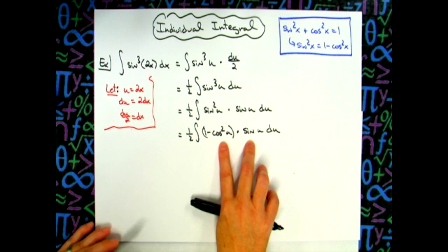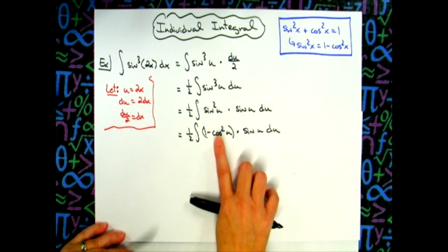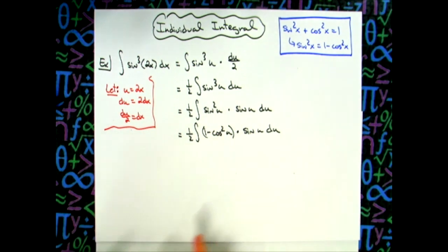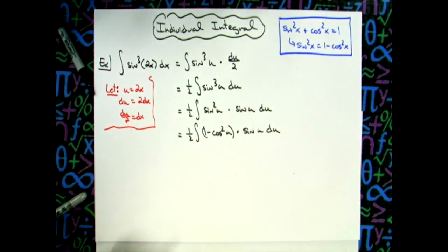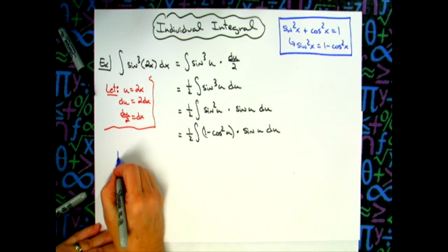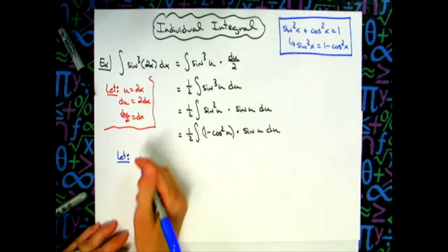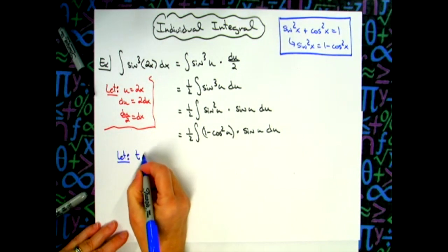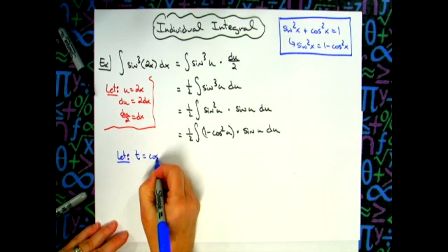If I let another variable, let's say t equal cosine, the derivative of cosine is sine, so that's going to cross that out. So we'll go to another substitution or double substitution. We're going to let, and I'm just going to randomly choose t because I need another variable. So t equal cosine u.